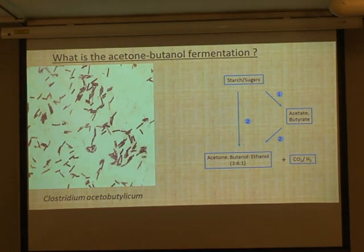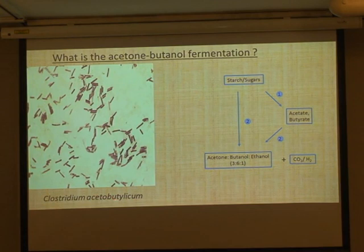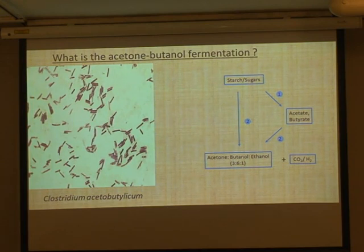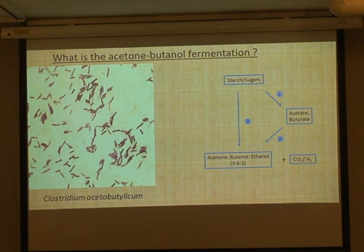What actually is the acetone-butanol fermentation? This slide shows a stain of the organism, which is Clostridium acetobutylicum as we call it nowadays, and it's what we call a gram-positive rod. These are about 3 microns in length and they also produce these little unstained bits, which are heat resistant spores that aid in propagation. It can grow in the absence of air - in fact oxygen is toxic to Clostridia normally - and it's widespread in the environment.